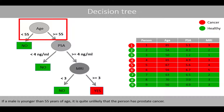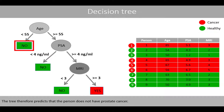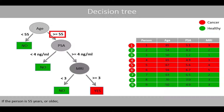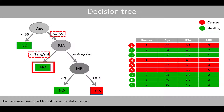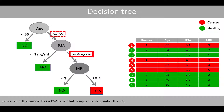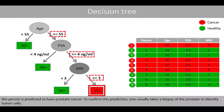If a male is younger than 55 years of age, it is quite unlikely that the person has prostate cancer, so the tree predicts no prostate cancer. If the person is 55 years or older but has a PSA level less than 4 nanograms per mil, the person is predicted to not have prostate cancer. However, if the person has a PSA level equal to or greater than 4 and an MRI score equal to or greater than 3, the person is predicted to have prostate cancer. To confirm this prediction, one usually takes a biopsy of the prostate to identify tumour cells.